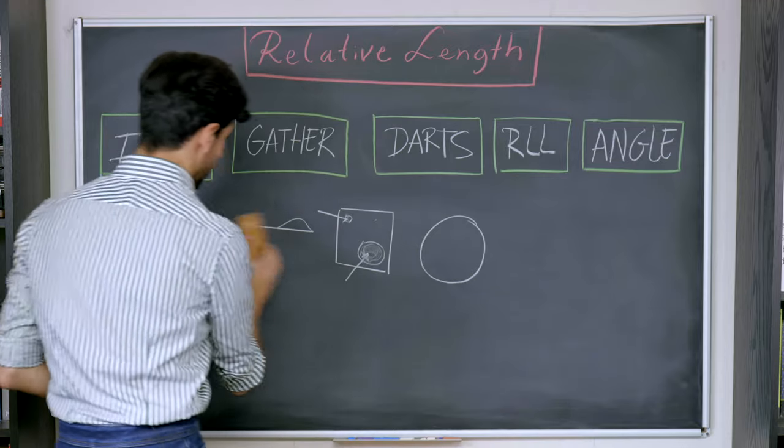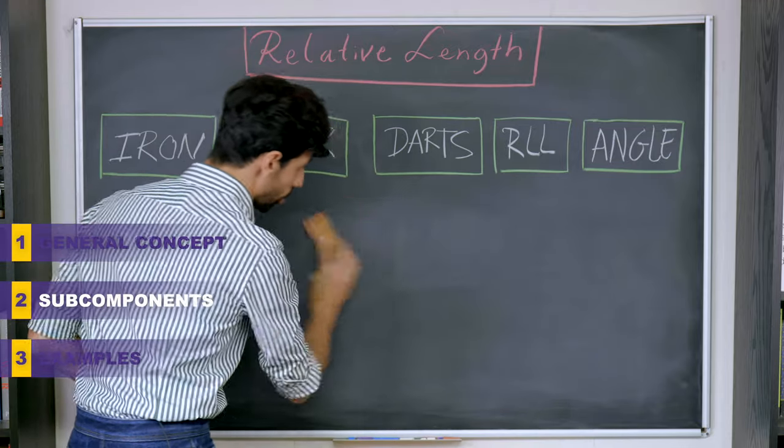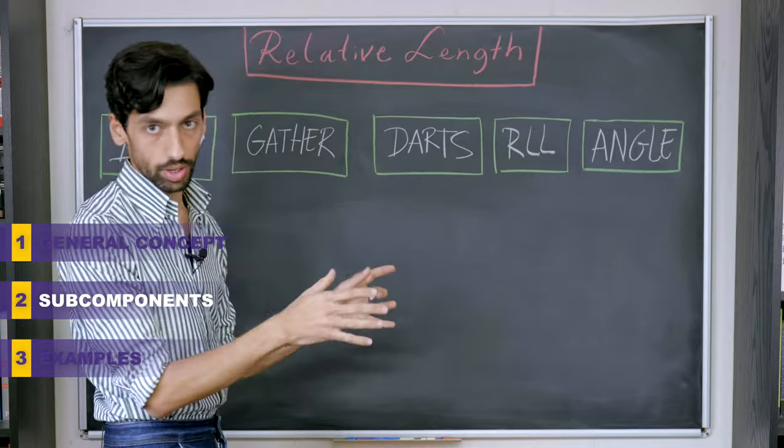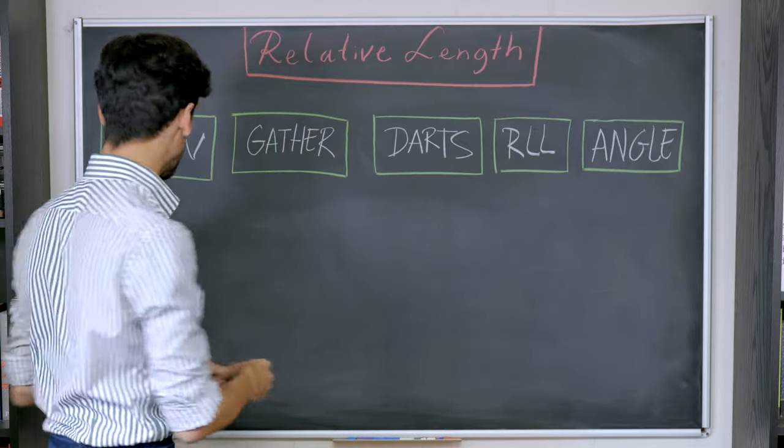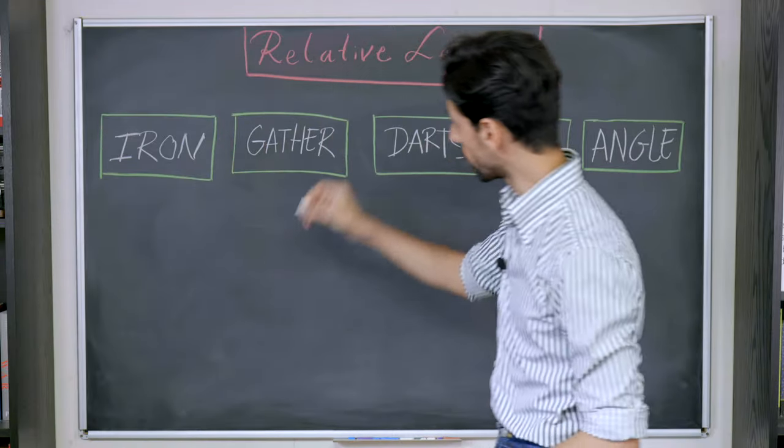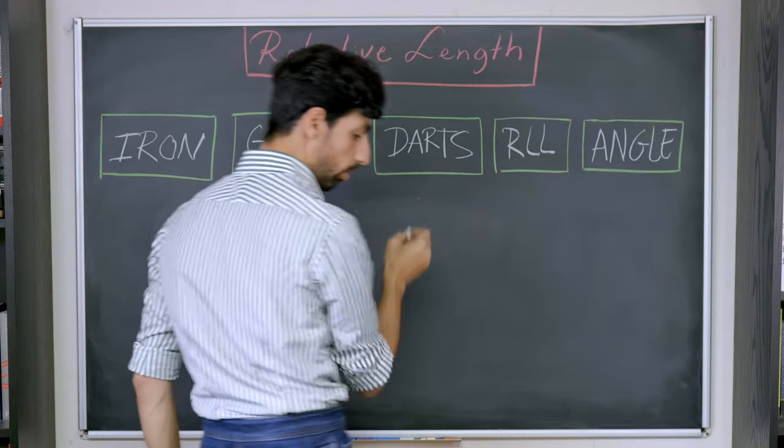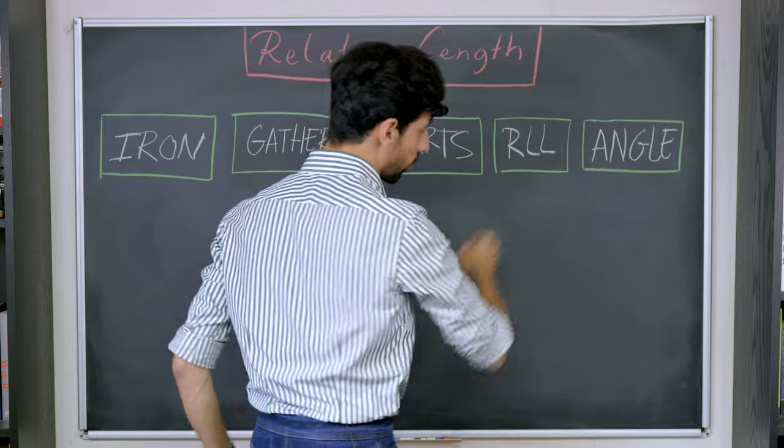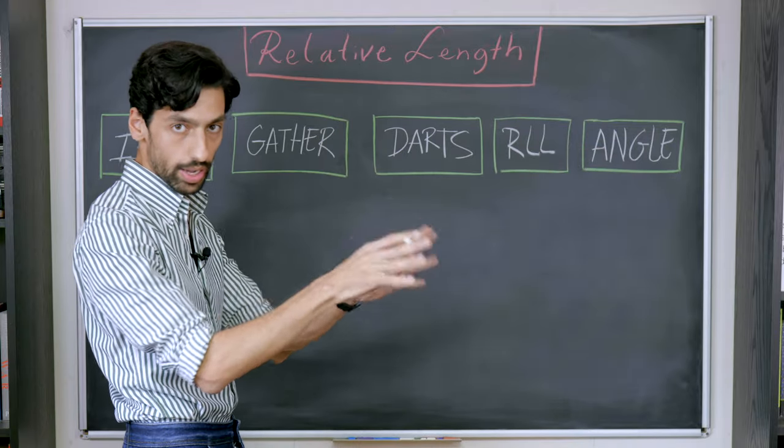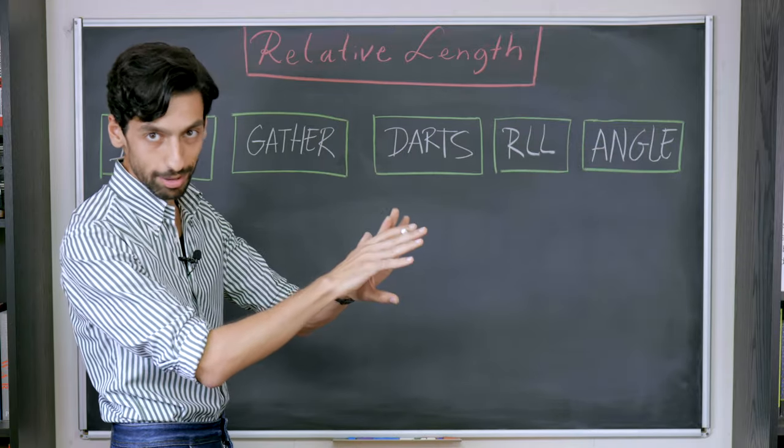Now, we can change the surface of our material in a variety of ways. We can do that with iron work, we can do that with gathering the material, we can do that with darts, we can do that with relative layer length, and we can do that by joining two layers with different angles together.